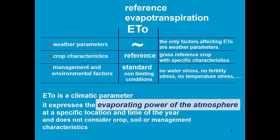It expresses the evaporating power of the atmosphere at a specific location and time of the year. In the northern Europe, the evapotranspiration will be different than at the tropics. And in winter, it will be different than in summer. It does not consider crop, soil, or management characteristics.